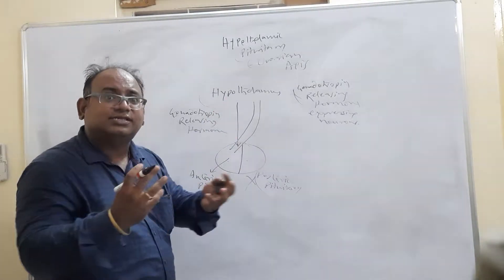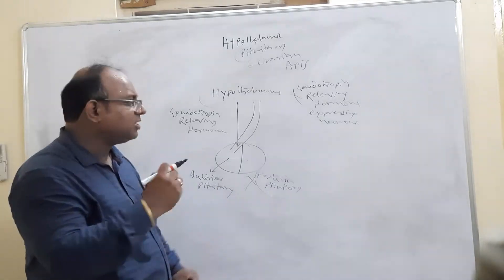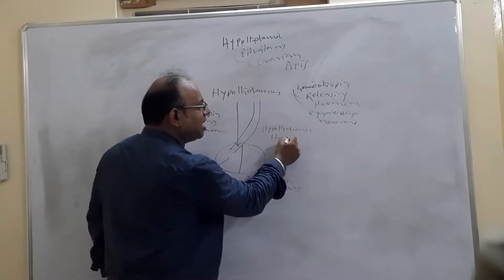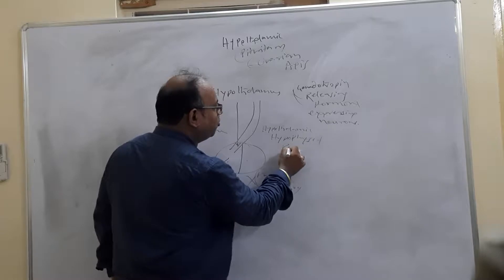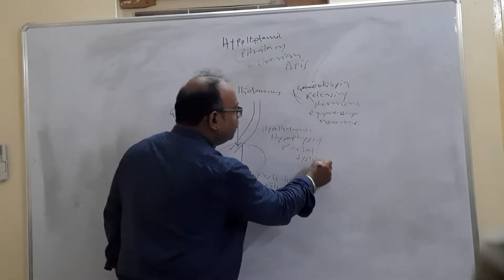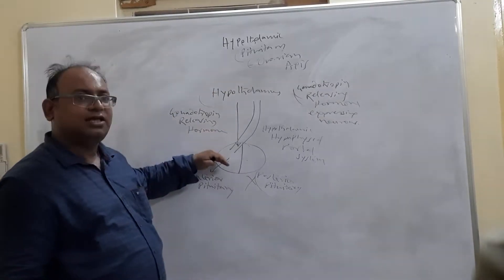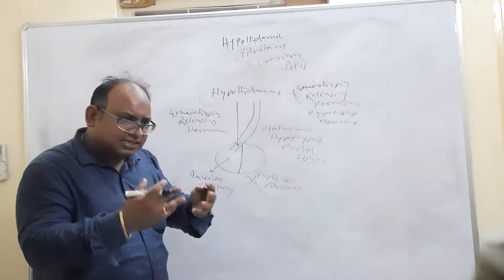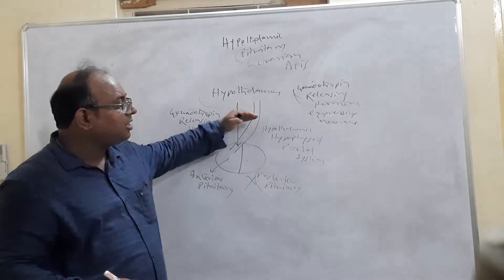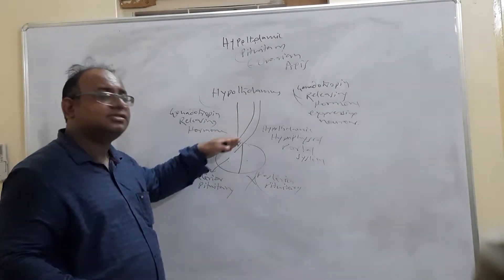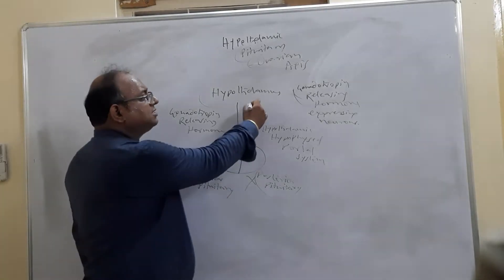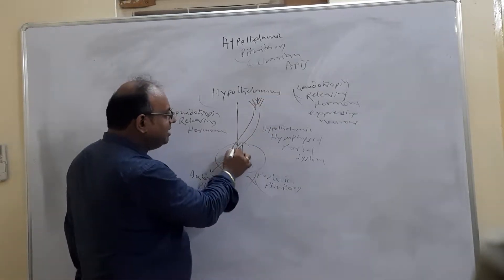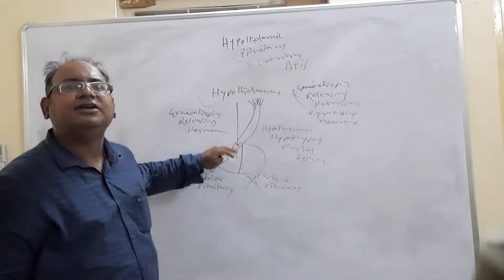By means of a portal system — a system of blood vessels — called the hypothalamic-hypophysial portal system, the hypothalamus and pituitary are connected. This portal system begins with capillaries and ends in capillaries, connecting both hypothalamus and anterior pituitary. So the gonadotropin-releasing hormone released from hypothalamus comes directly into the anterior pituitary.